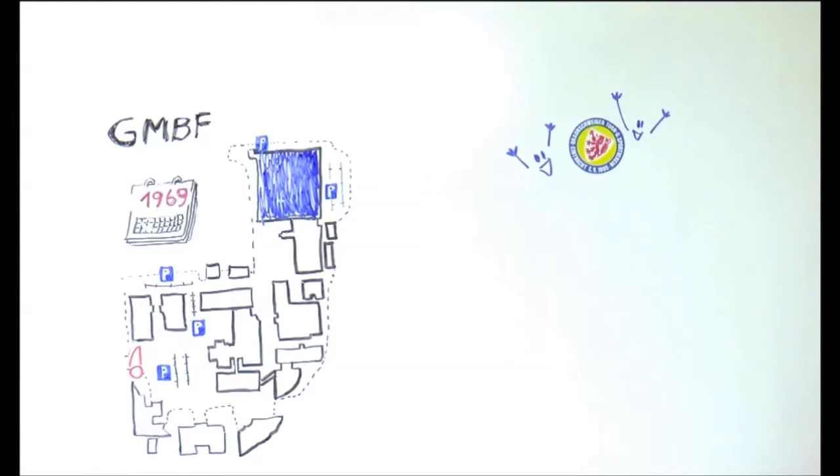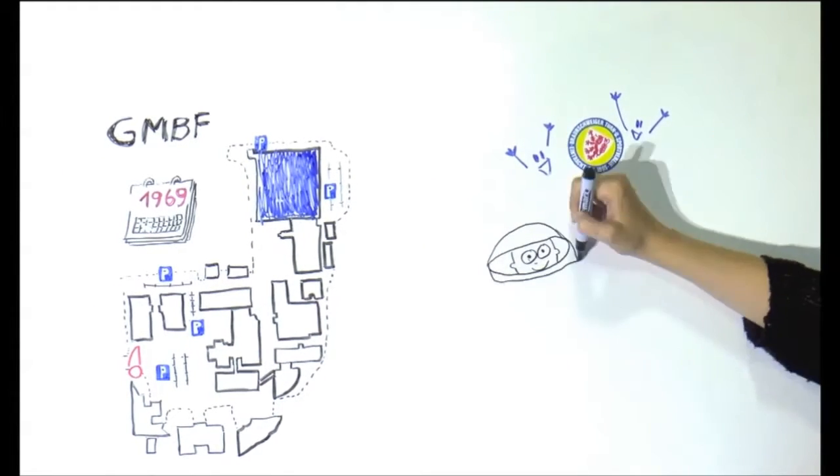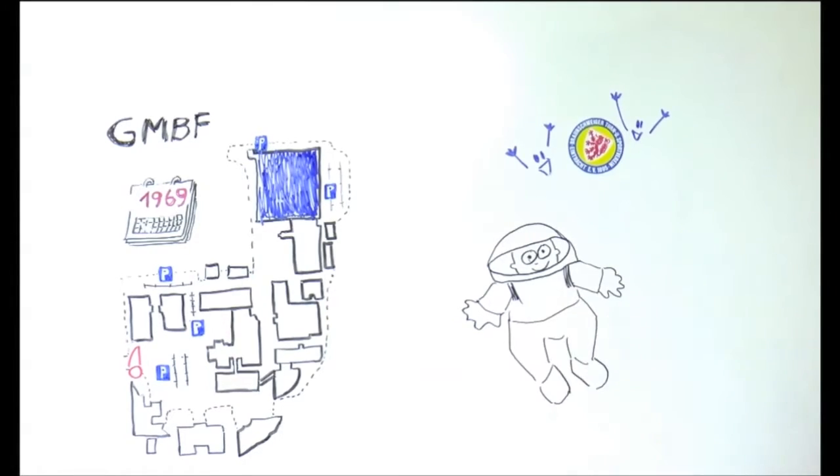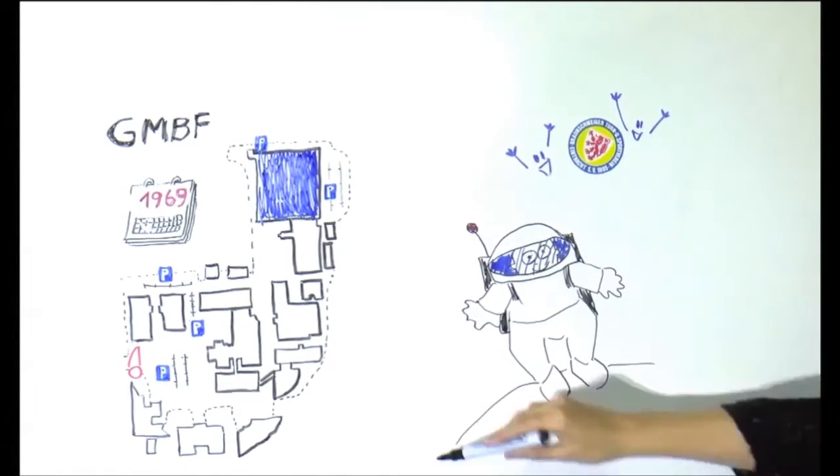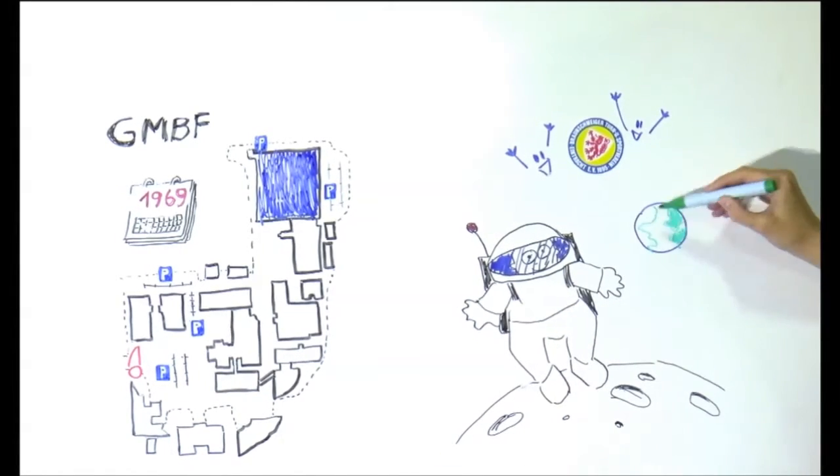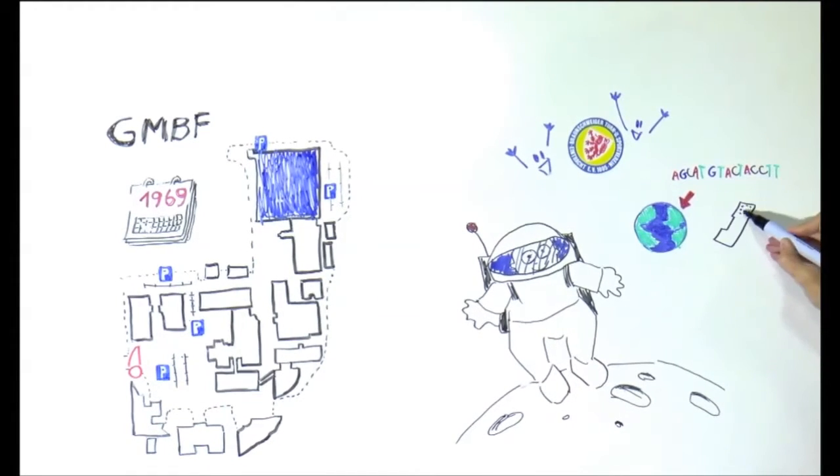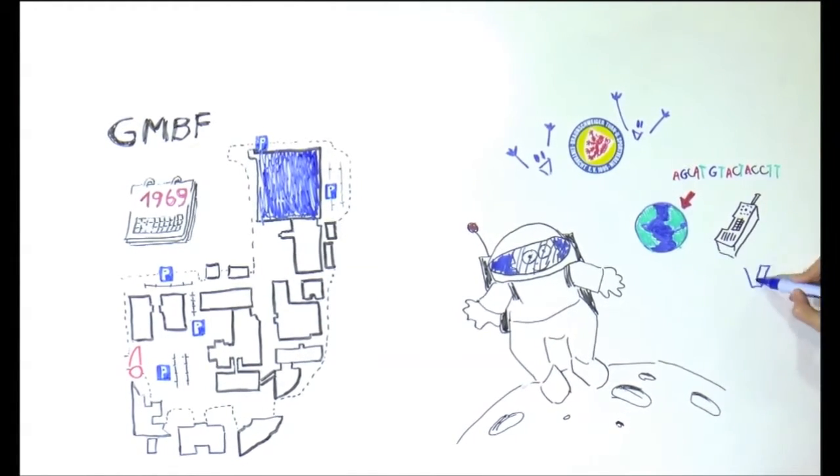In 1969, while men reaches the moon for the first time, back on planet Earth, Sanger sequencing is happening. The first mobile phones become available and the first Volkswagen Golf is in the streets.